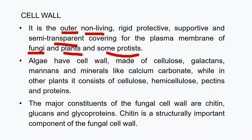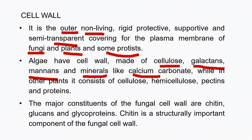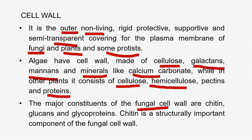In algae especially, cell wall is made up of cellulose, lactans, mannans and minerals like calcium carbonate. While in case of plants it consists of cellulose, hemicellulose, pectins and proteins. If we talk about the major constituents of the fungal cell wall, then it is chitin, glucans and glycoprotein. Chitin is the structurally important component of all fungal cell walls.